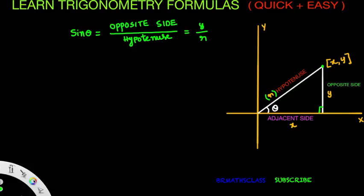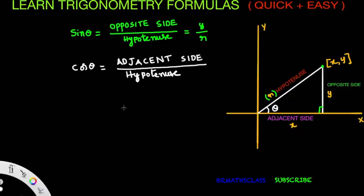Cos theta is defined as adjacent side divided by hypotenuse. Observe the diagram — adjacent side we taken as X, so cos theta equals X divided by R. So sin theta equals Y by R and cos theta equals X by R.